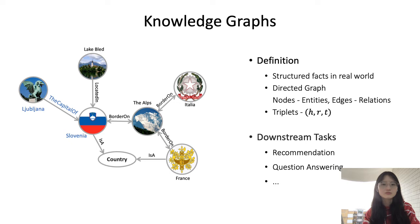Knowledge graphs are structured data in the real world. They can be seen as directed graphs where nodes are entities and edges are relations. For example, in the left figure, Ljubljana is the capital of Slovenia. All these three elements constitute a triplet, which is a basic storage unit of knowledge graphs. Based on this graph structure, we can conduct many downstream tasks, such as recommendation, question answering, or other tasks. But the algorithms on graphs always have high complexities.